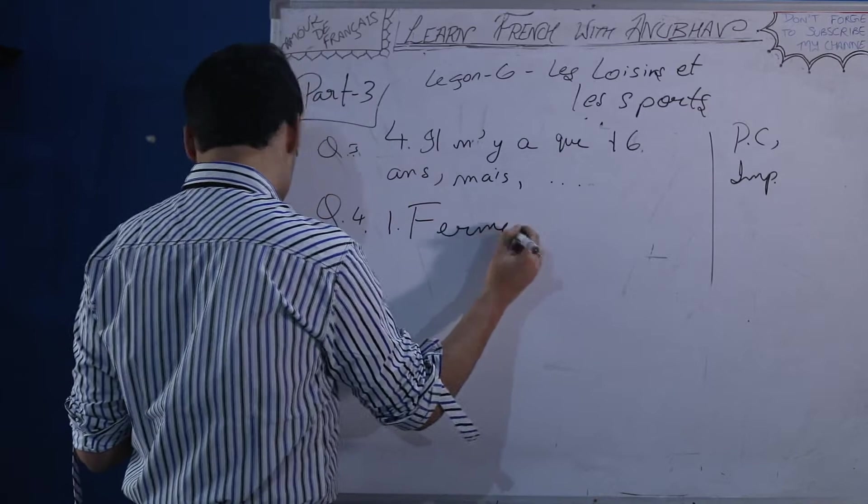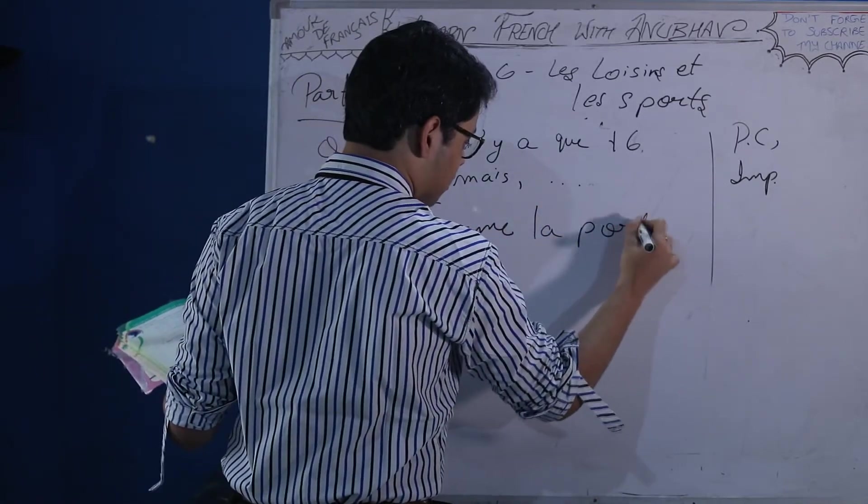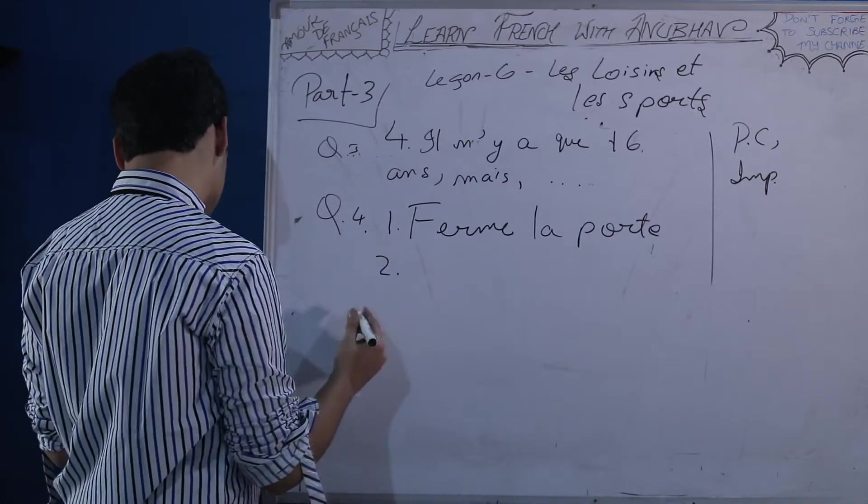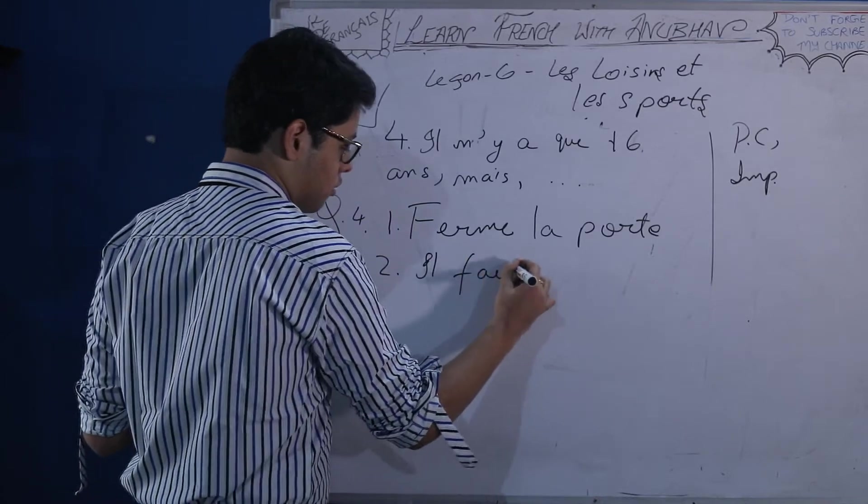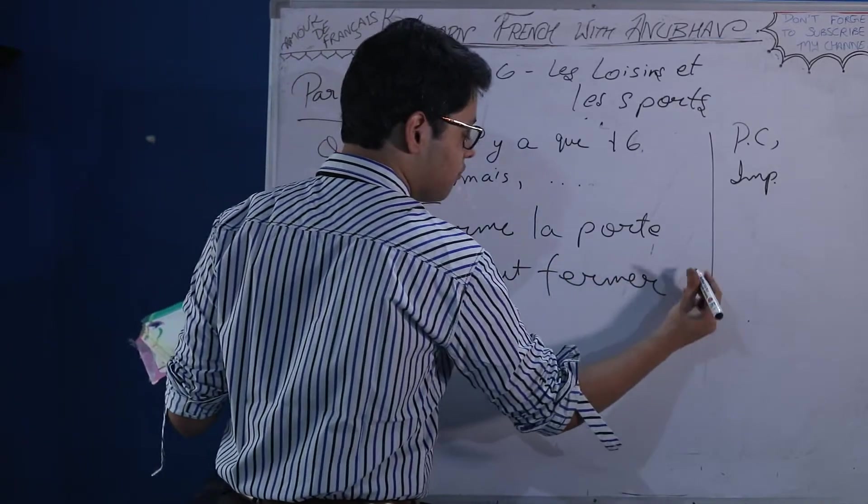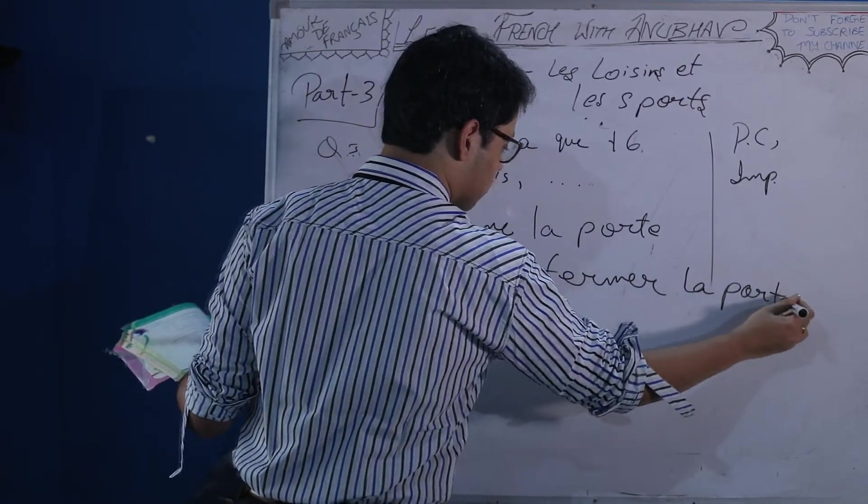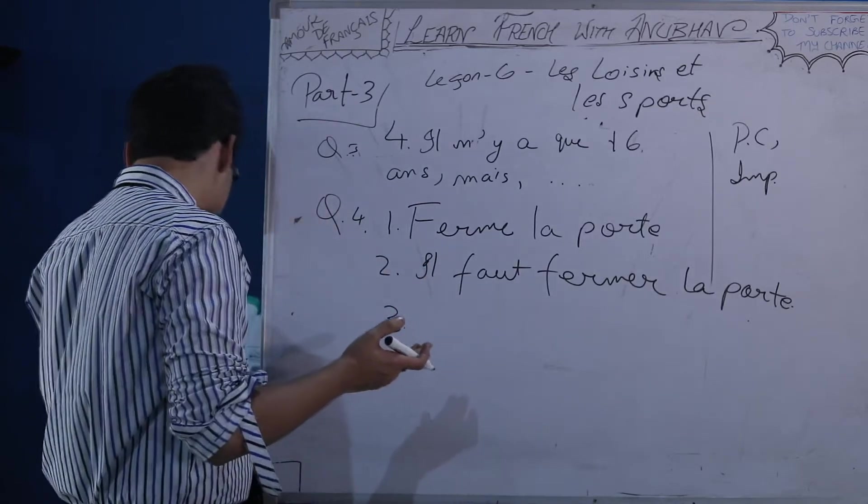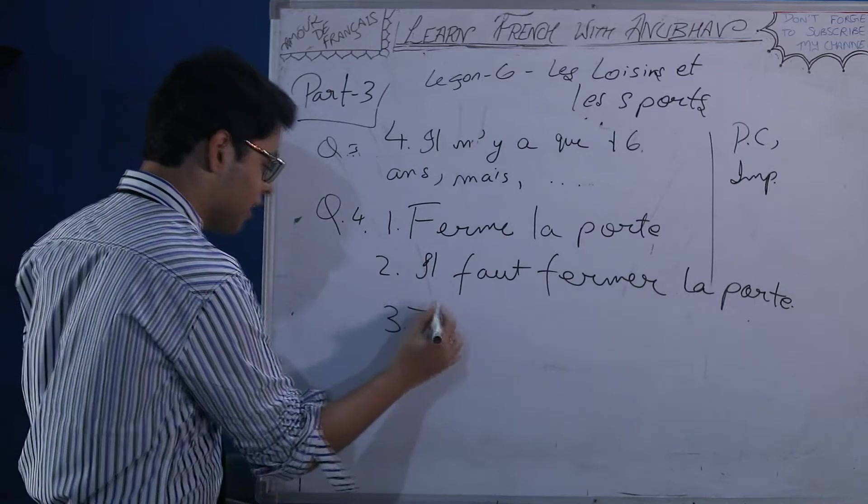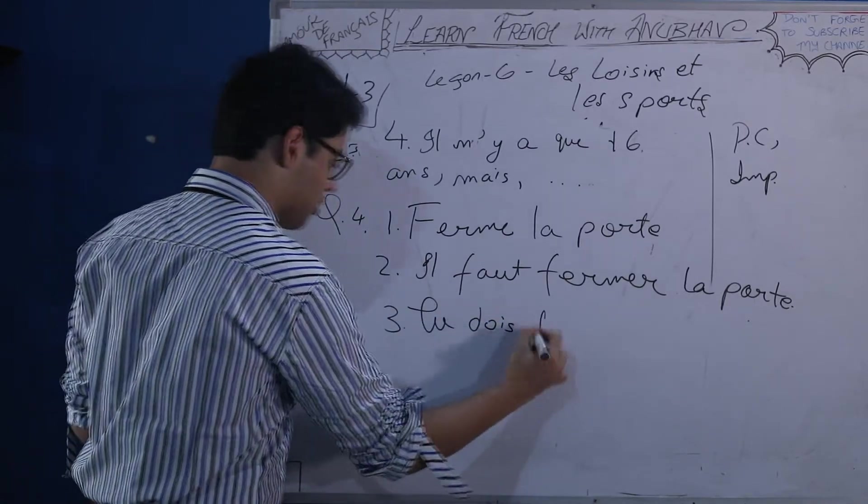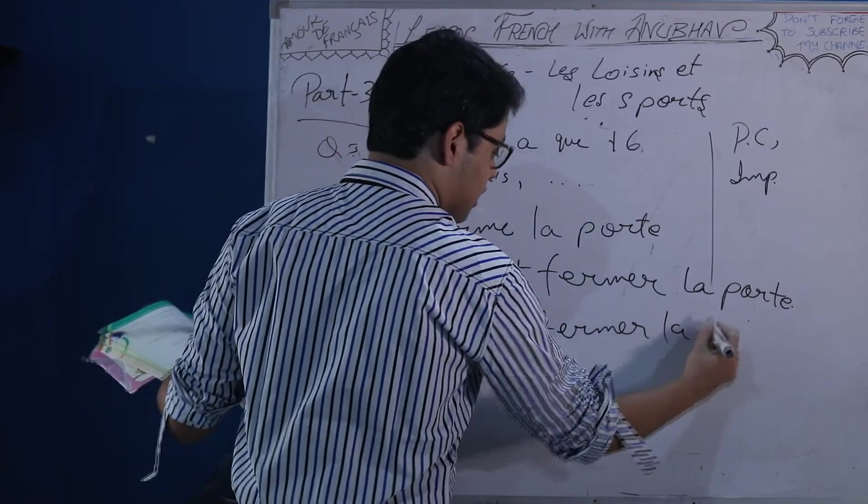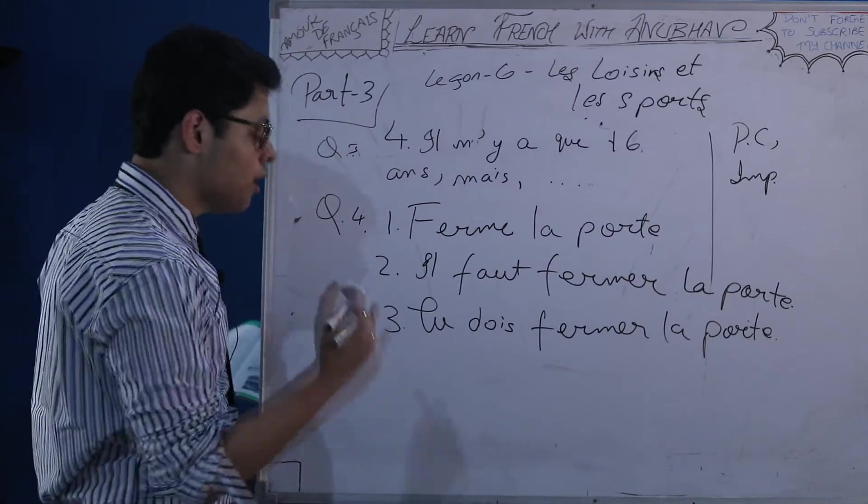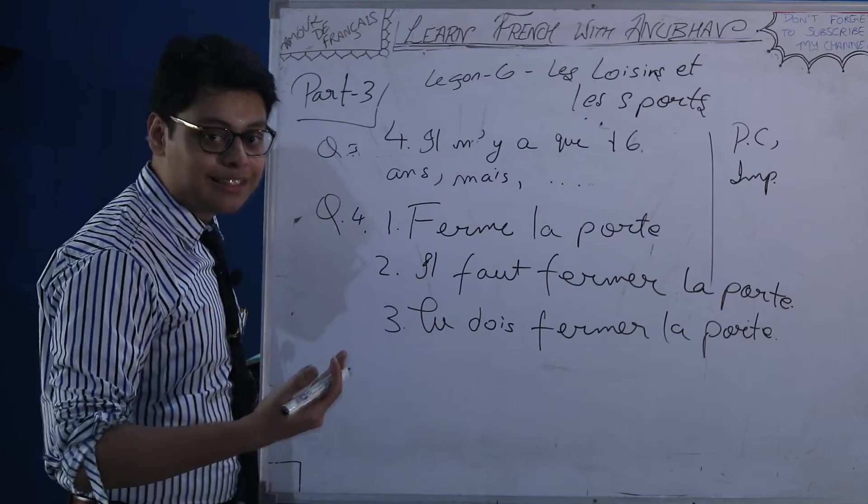First then, second they have, ferme la porte, close the door. This is imperative. Second could be written, ilfo, ferme la porte, infinitive form. It is a must that the door should be closed, because it is cold. And now using devoir, tu doa ferme la porte. Like here you can't use vu, because the father is speaking to his son, so he will be using tu. So tu doa ferme la porte, you must close the door.